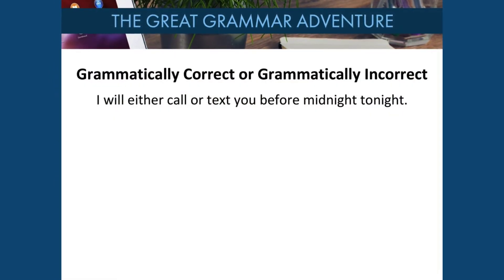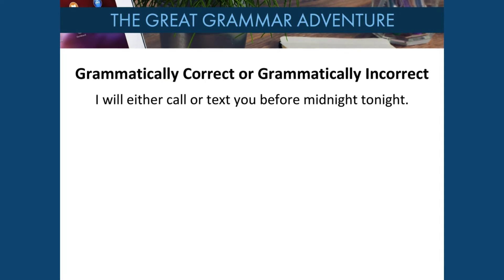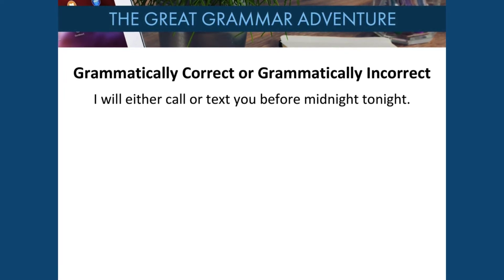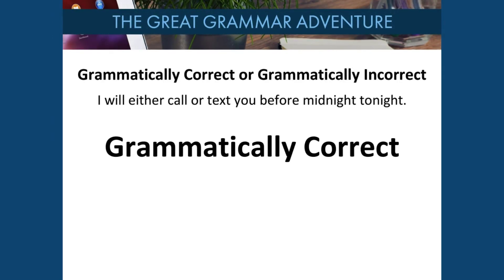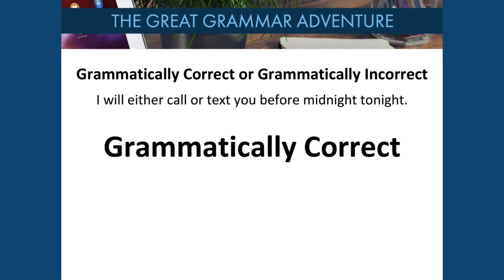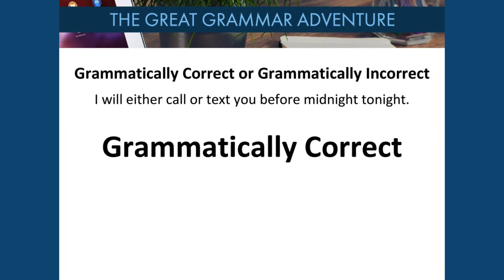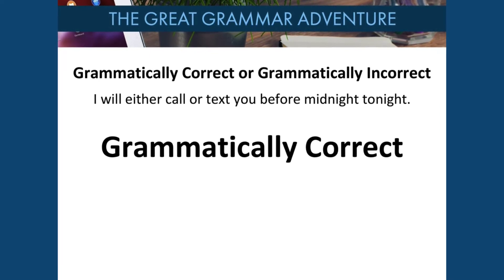I will either call or text you before midnight tonight. Is this grammatically correct or grammatically incorrect? This is grammatically correct because we're using the word either and also the word or in the same sentence.